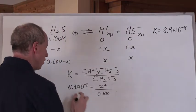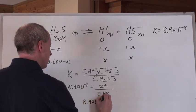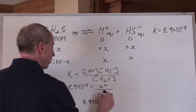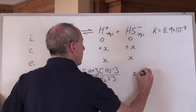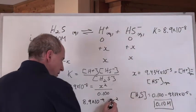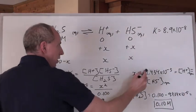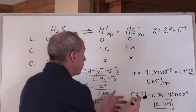If that's gone, then this times that equals X squared. So 8.9 times 10 to the negative 8 times 0.100 equals X squared, which is 8.9 times 10 to the negative 9 equals X squared. When you take the square root, you get X equals 9.343 times 10 to the negative 5.